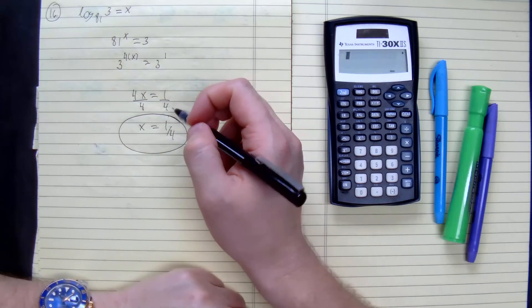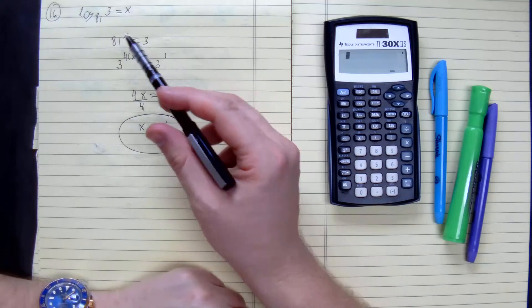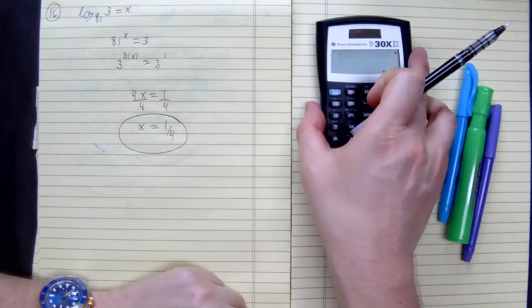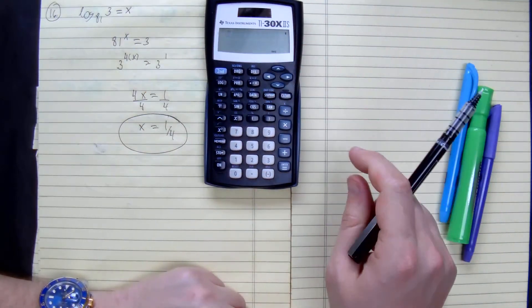You can check your work with the calculator. You can do the quotient rule as well.